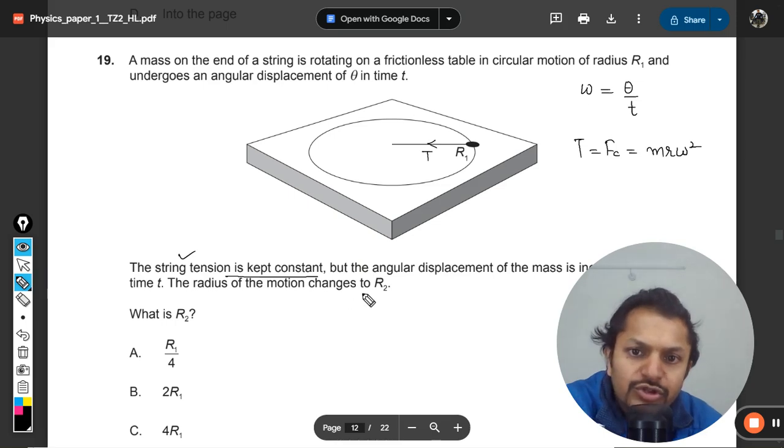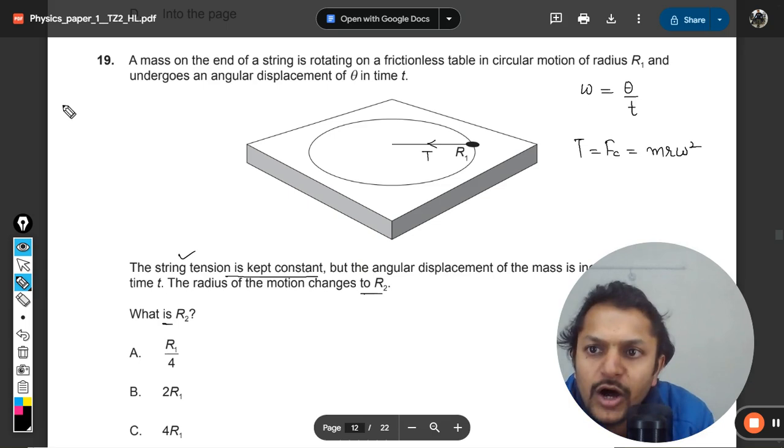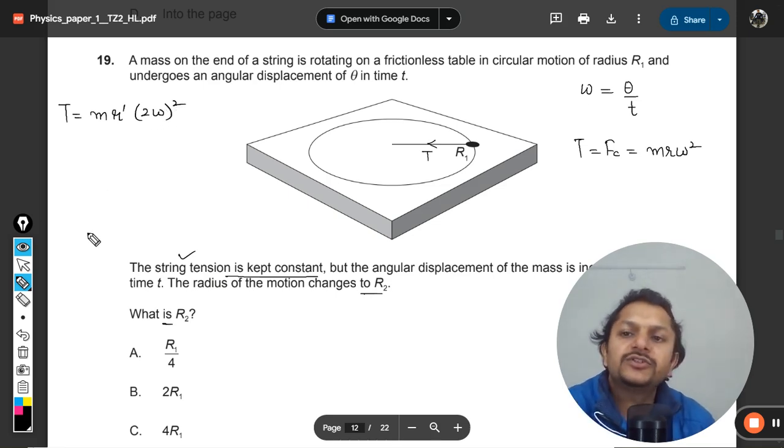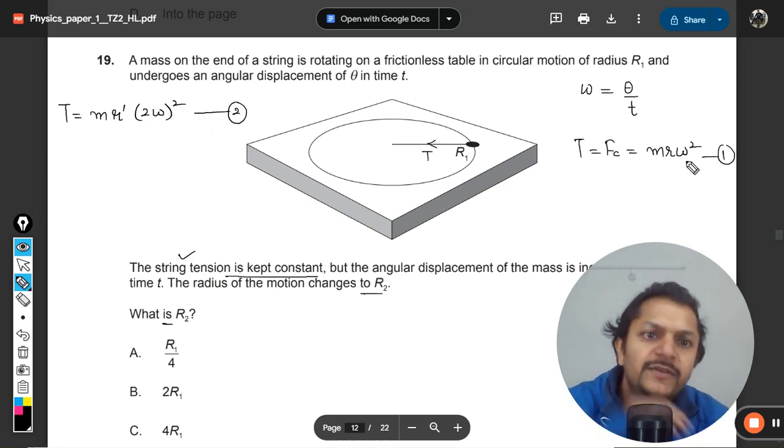The radius of the motion changes to r2. Okay, so what is r2? This is what they want. So in the second case, this T remains the same, radius is r dash, but the omega is doubled, so it is becoming like this.